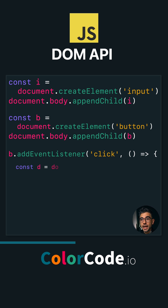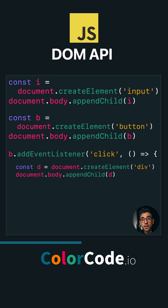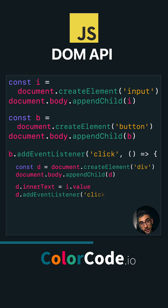In the function, we'll create a div and change its inner text to be what the user entered in the input field. Finally, we can add a click handler to each of those divs so that they get removed when you click them.